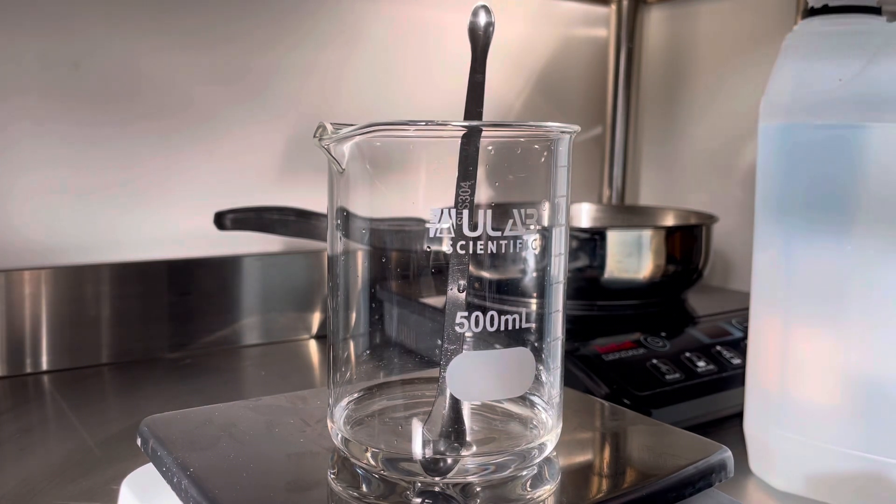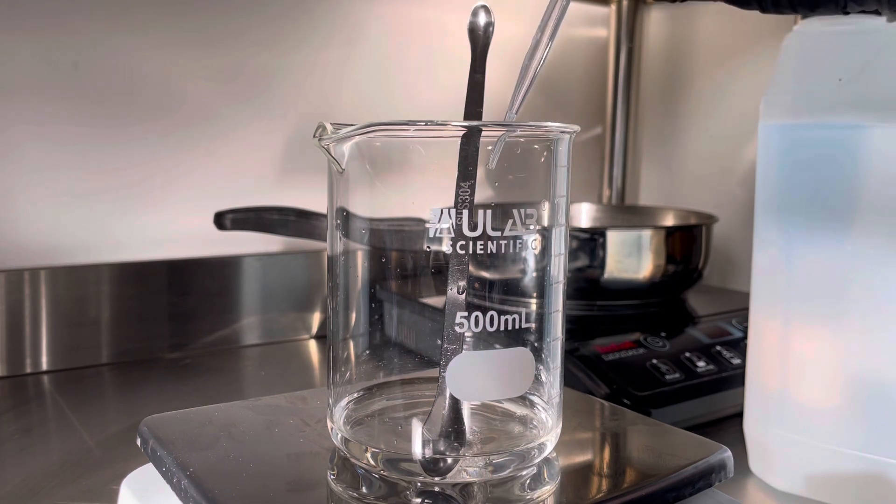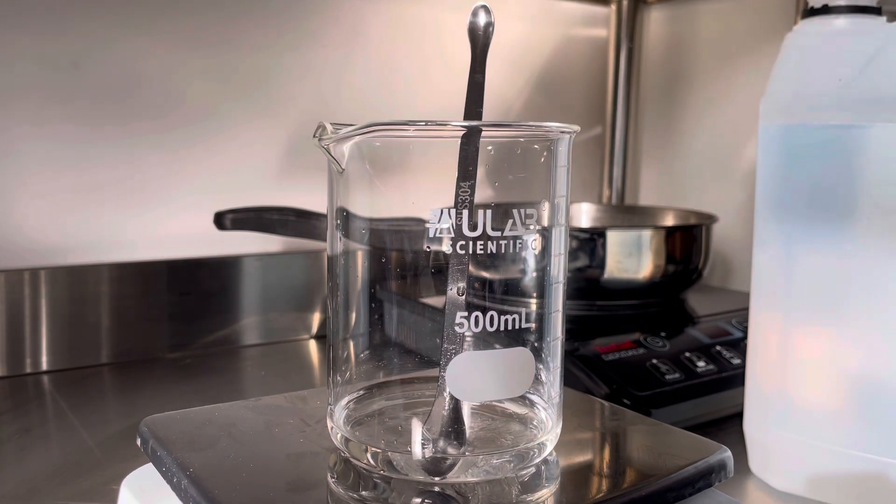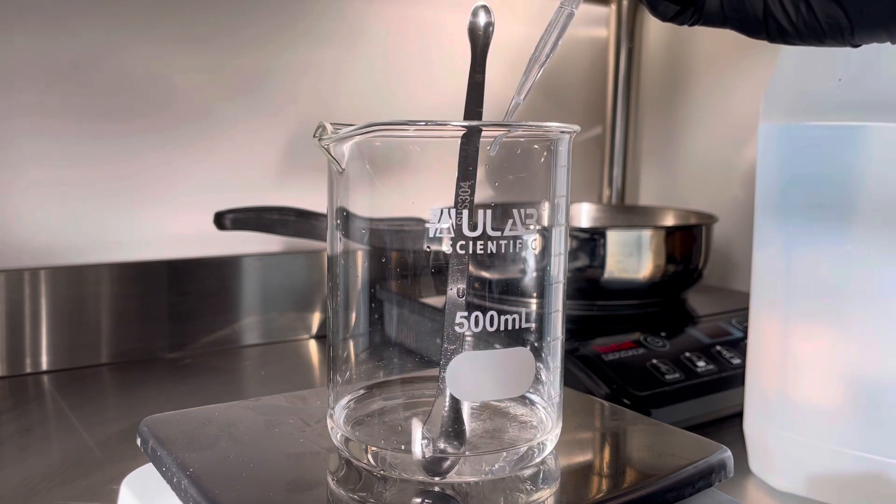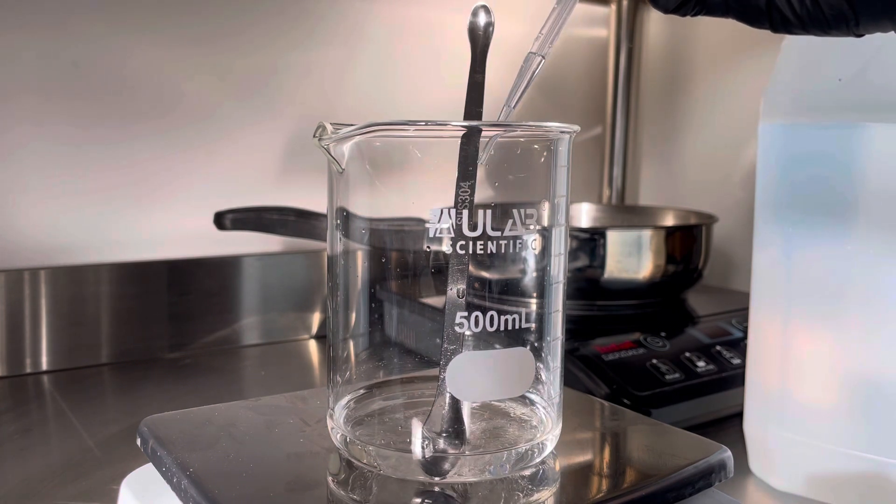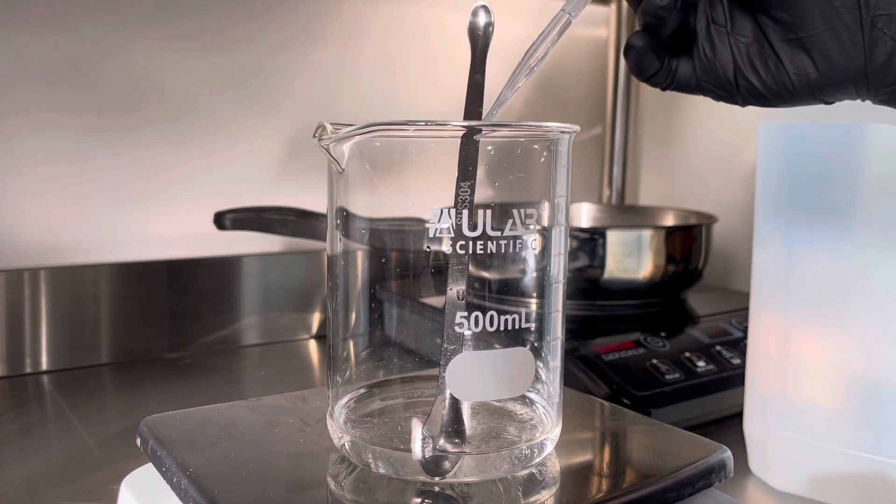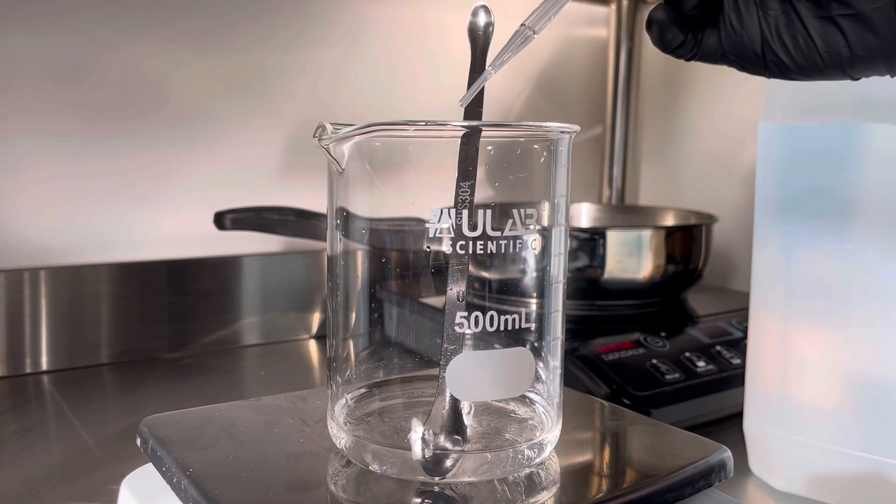We're also adding to this formula some water. Again it's a dilutant and it helps to dissolve the sodium stearate, but it also helps to reduce the sweating from the propylene glycol. Propylene glycol does attract moisture from the air, so the higher that percentage the more likely your bar is to sweat, or at least my experiments have found that anyway.